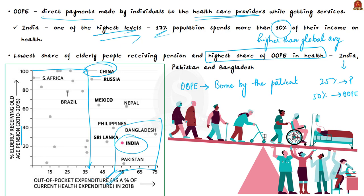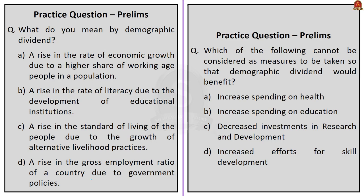India's demographic dividend has been praised for its current working age population, but projections show this scenario will not remain the same. The young population will age, impacting growth potential. These data points can be used in mains answers when discussing measures for the elderly and how India can use its demographic dividend for growth and development, or even in Prelims where statements about India's high out-of-pocket expenditure appear.